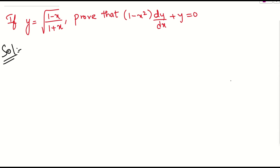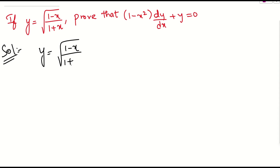Let us see what was the question given here. They are telling y is equal to root of (1 minus x) by (1 plus x). We need to prove that (1 minus x squared) into dy/dx plus y is equal to 0.